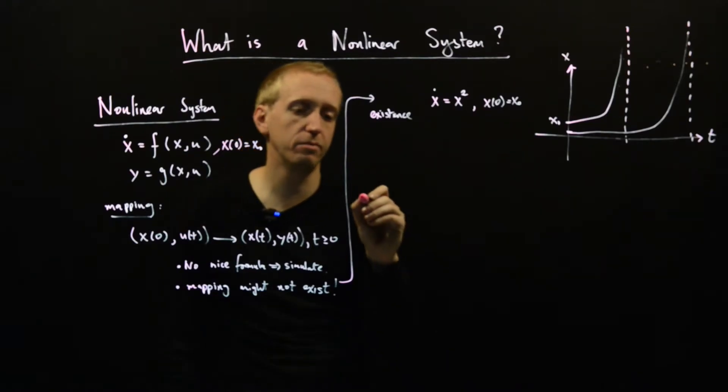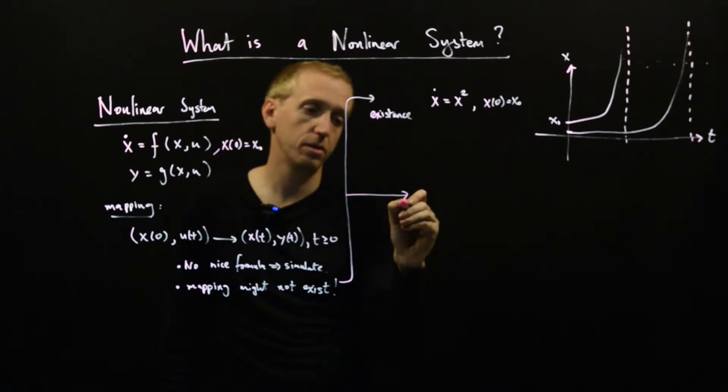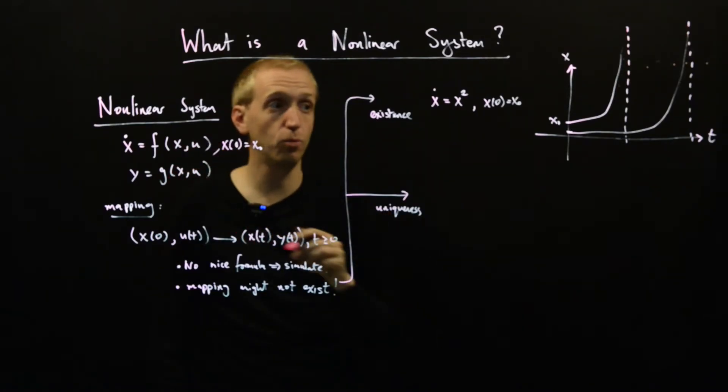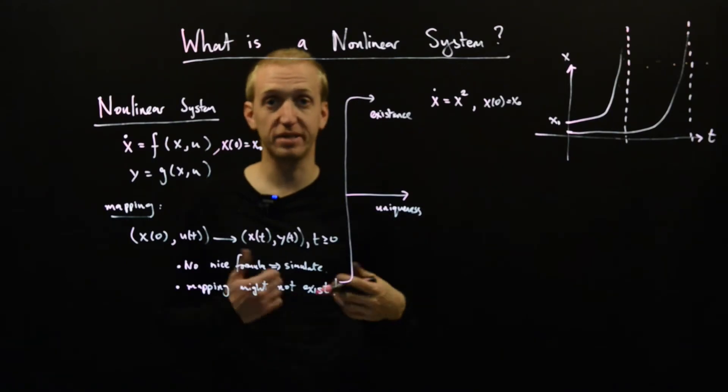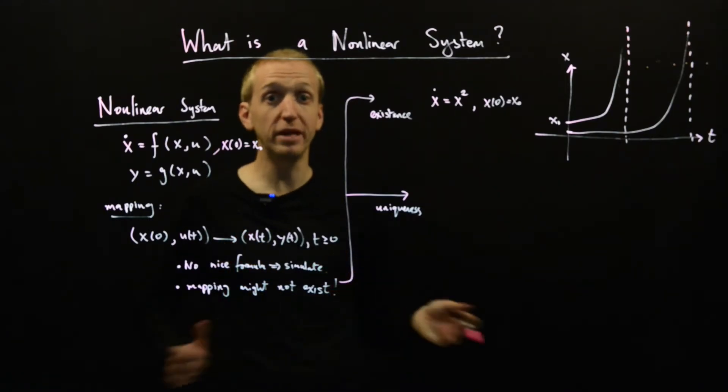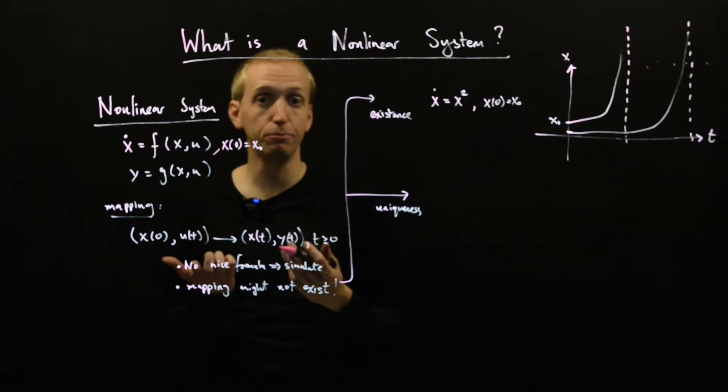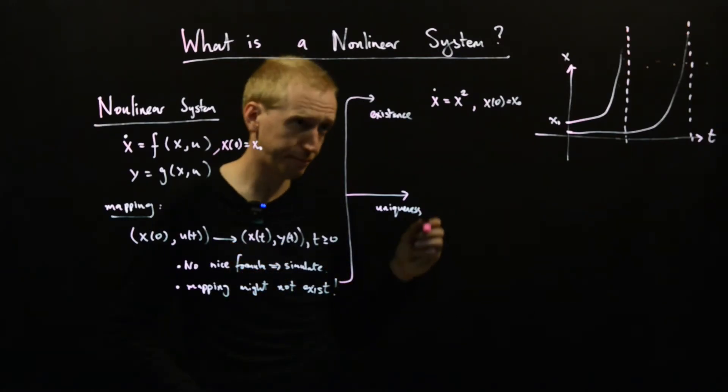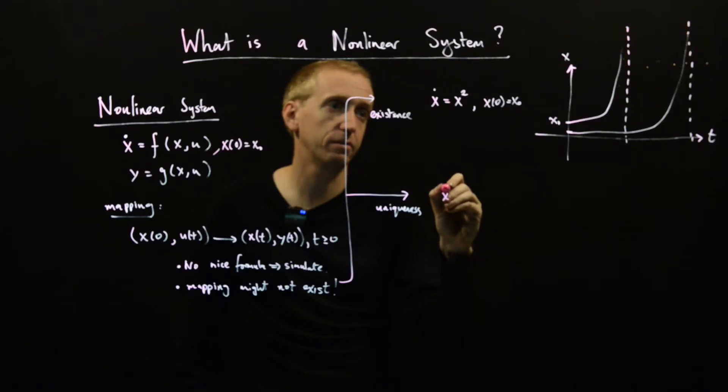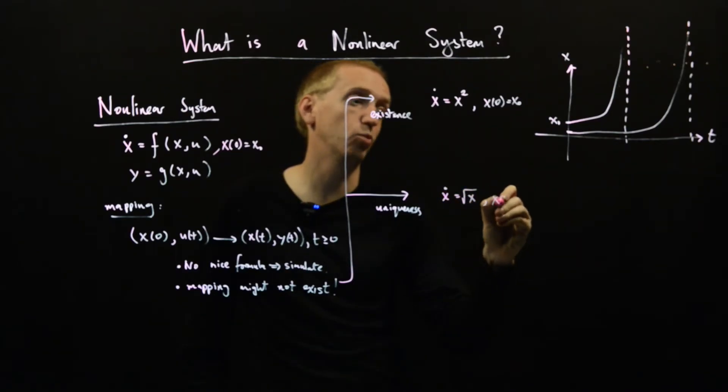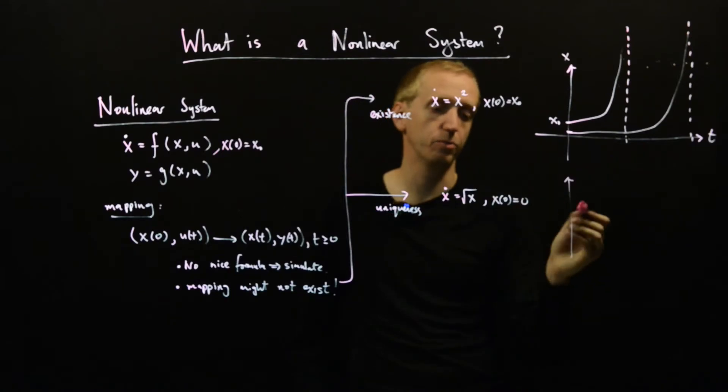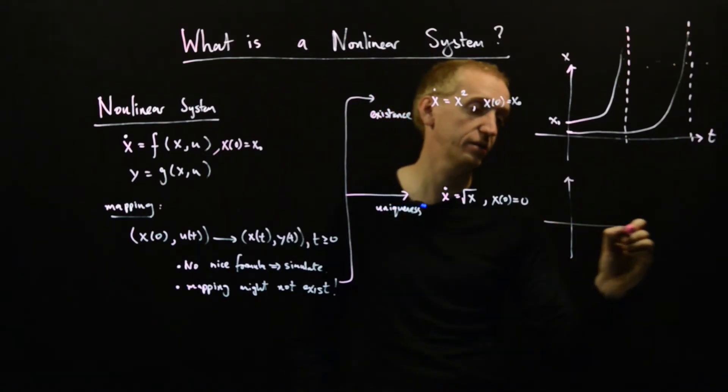And you also have another problem, and that's uniqueness. So actually you can come up with examples of systems on this form where the solution might not even be unique. That means for the same initial condition and same inputs, there are many possible solutions, and as a mathematical object, there's no way to tell which one of those solutions is the actual prediction that you're interested in. And so the simple example here is x dot is equal to the square root of x, but this time with initial condition at the origin.